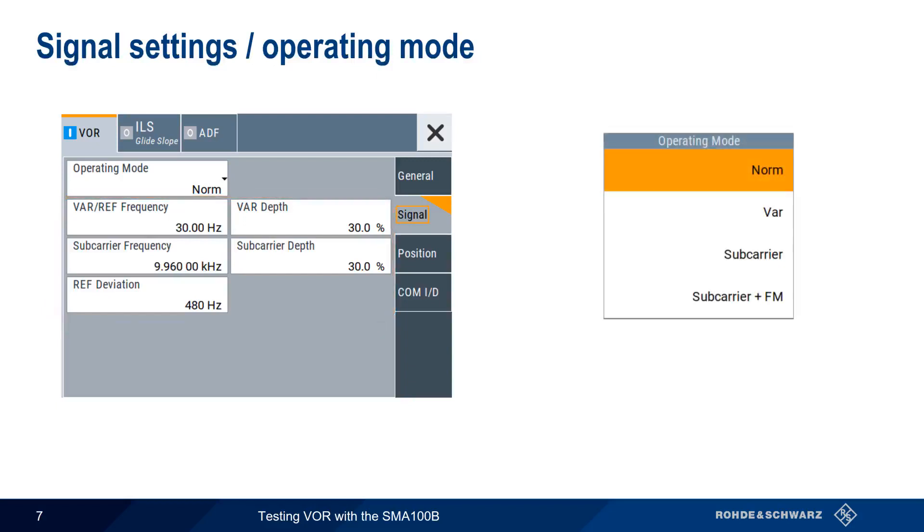The four different operating modes control which of the VOR signal components are present and or modulated. NORM generates the standard VOR signal with the optional COMID, whereas the other three options selectively enable the variable and reference signals with or without modulation. Again, to generate a standard VOR signal, the default values for operating mode and signal modulation should be used.